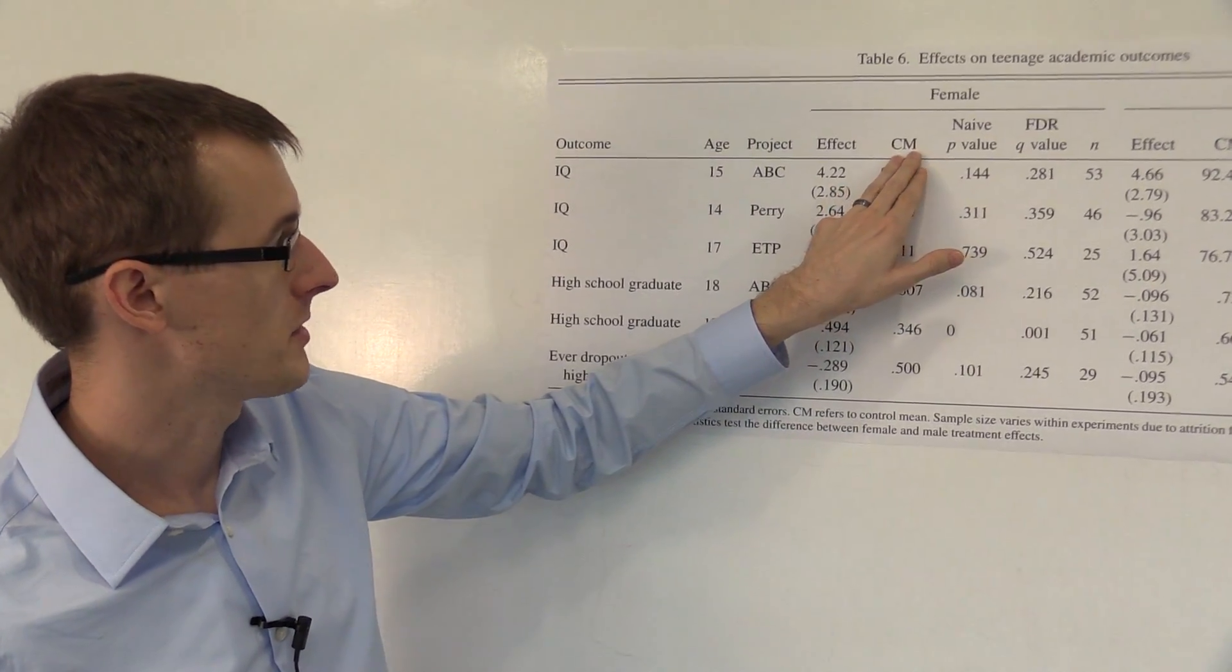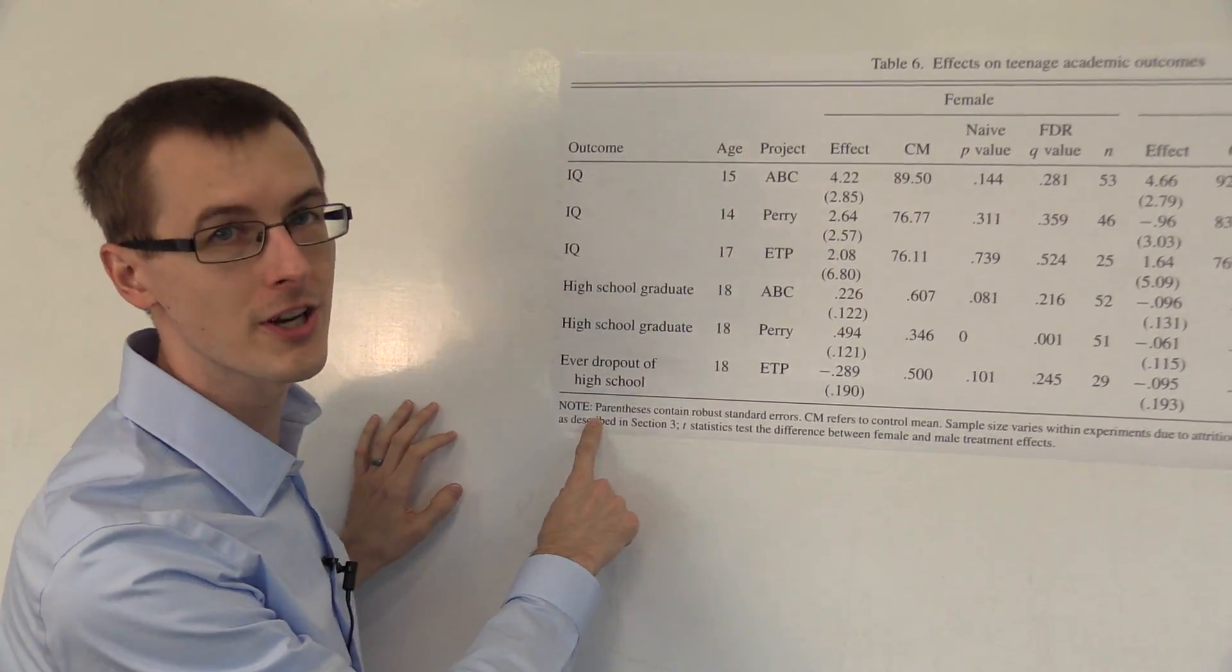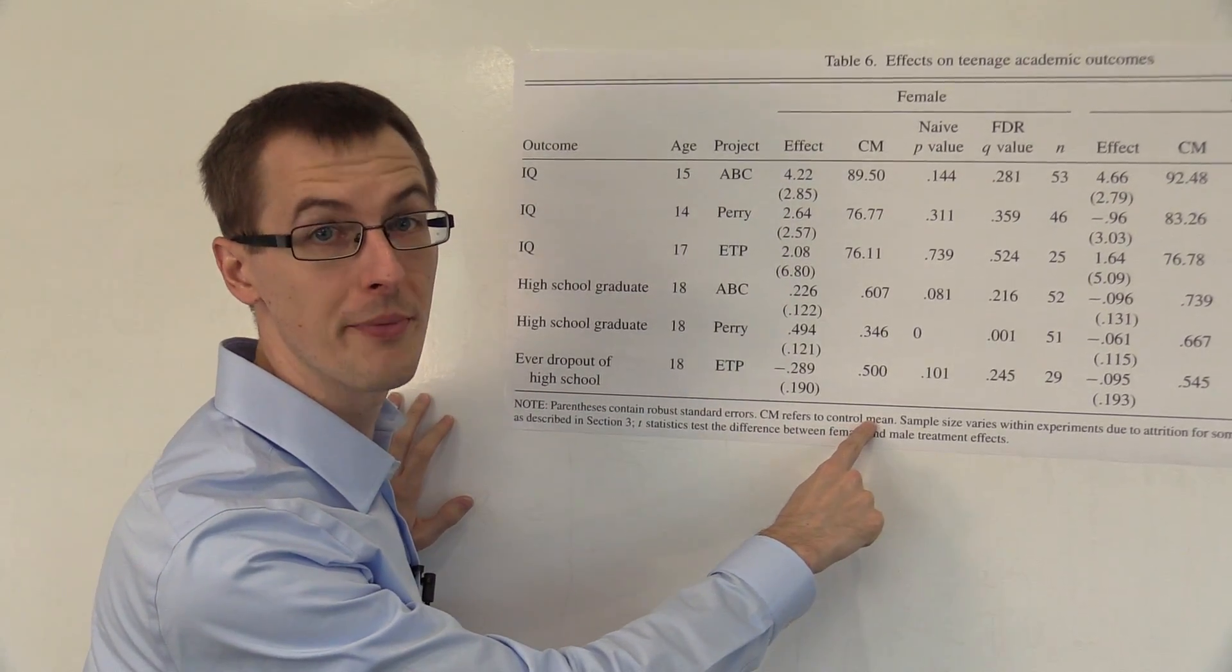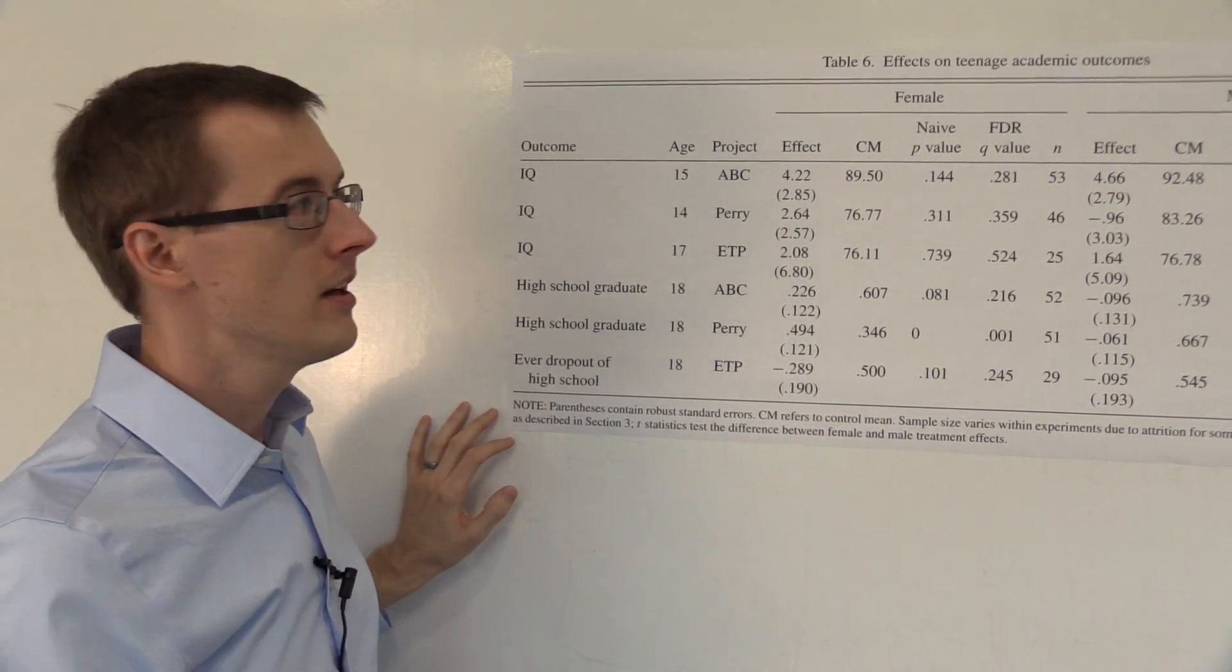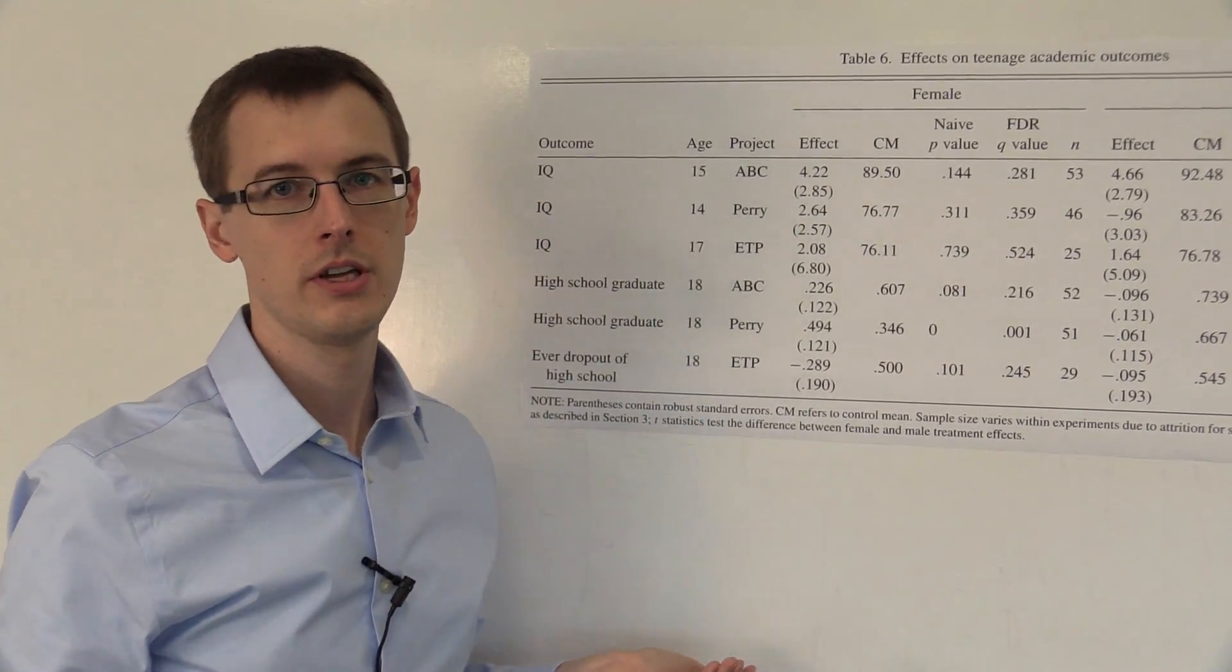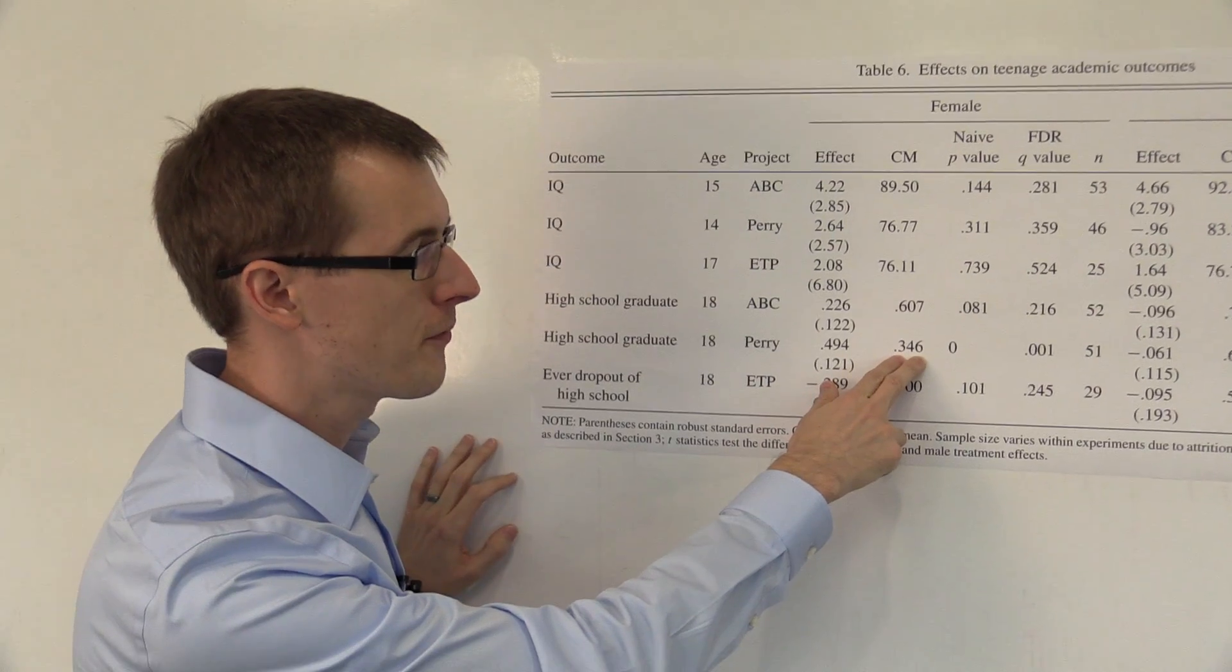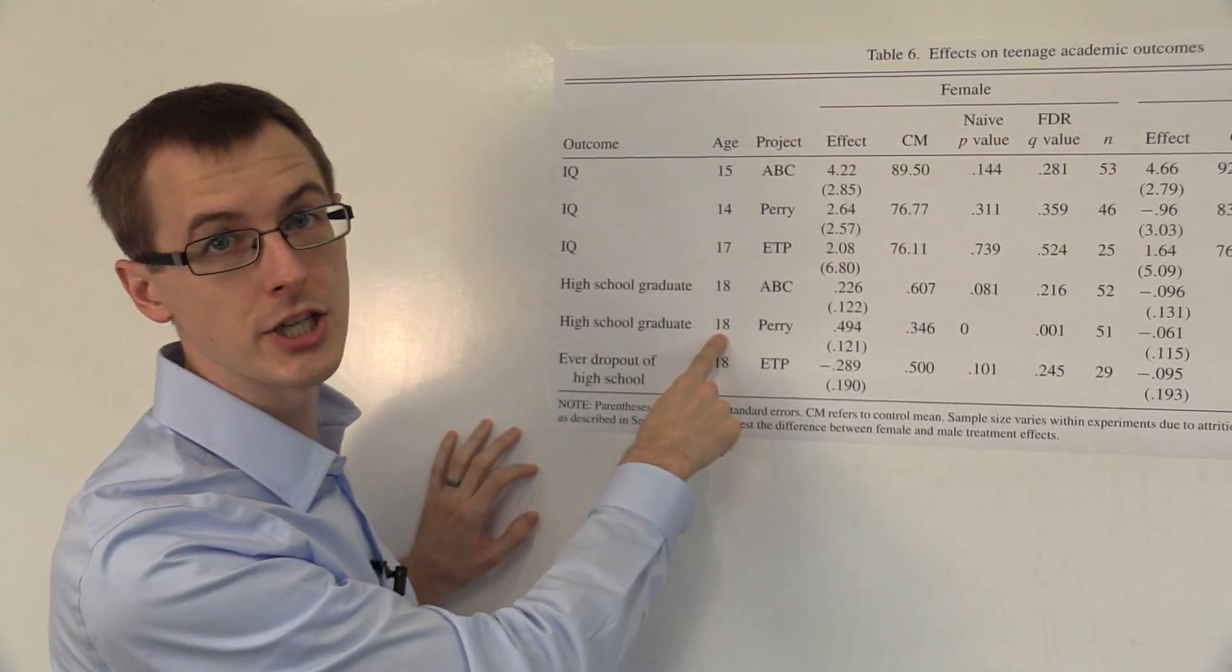Over here we've got a column labeled CM. The footnote tells you exactly what it means: CM refers to control mean. That just means the average outcome among females in the control group, the people who didn't get preschool. Among the females who didn't get preschool, about 34.6% of them graduated from high school by age 18.